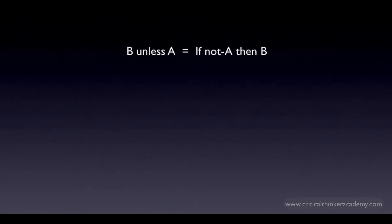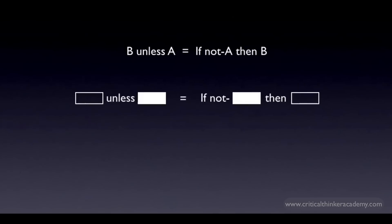Don't be too fixated on which letters we're using to represent the antecedent and the consequent. For some, it may be helpful to think in terms of general placeholders. I like simple translation rules that are easy to remember, so I usually say to myself: read 'unless' as 'if not.' This is probably the easiest way to remember this rule.